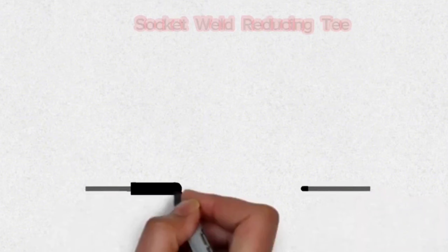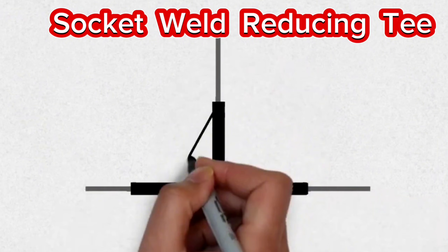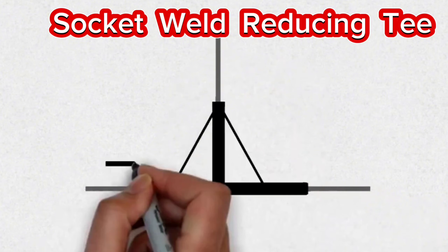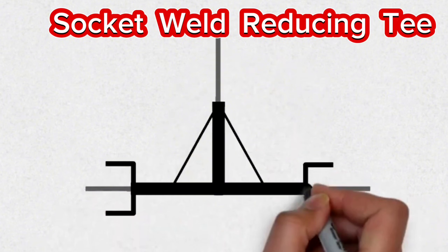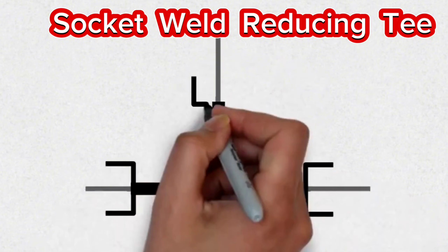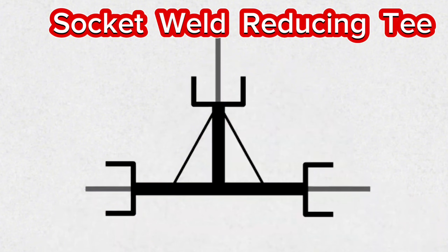This symbol, which is used in pipe isometrics, is the isometric symbol of the socket weld reducing pipe T. These T symbols are used in socket weld pipeline isometrics.